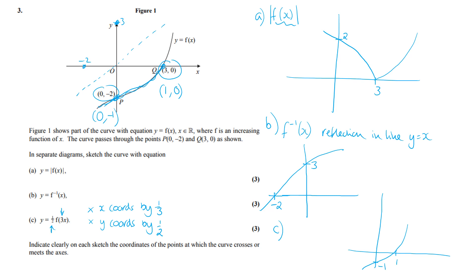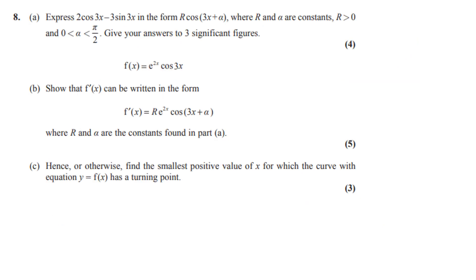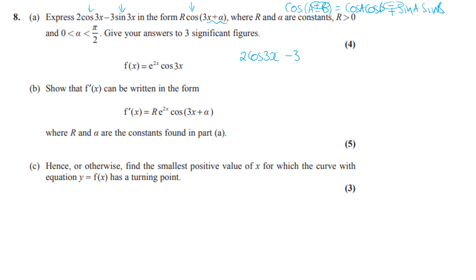This question involves trig and differentiation. We need to express 2cos(3x) − 3sin(3x) in the form R·cos(3x + α), reducing it to one trig ratio. Using the addition formula from the formula book: cos(A + B) = cos A cos B − sin A sin B. We match coefficients: 2 = R cos α and 3 = R sin α.